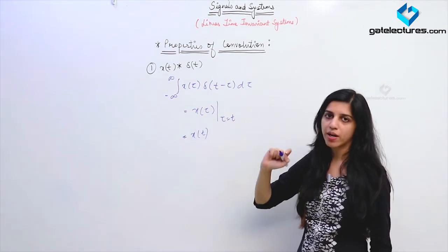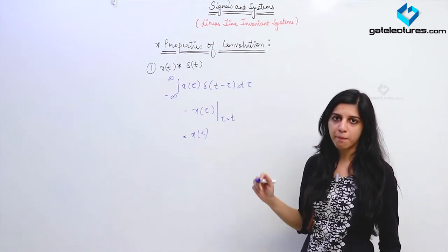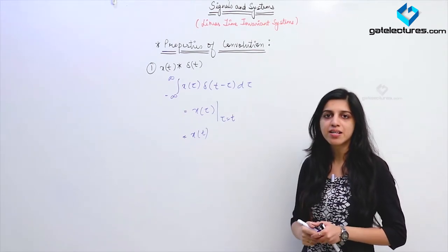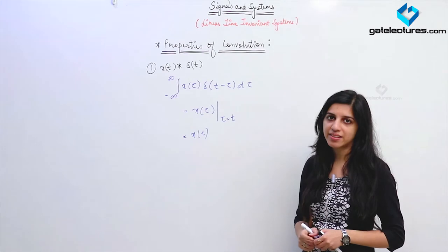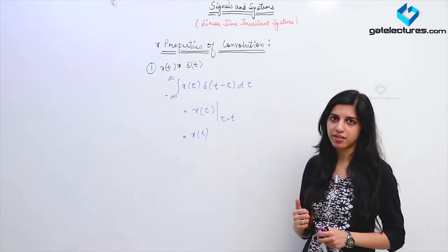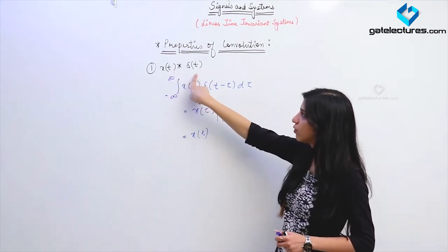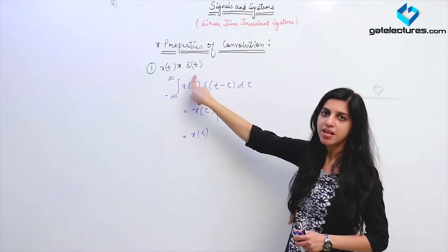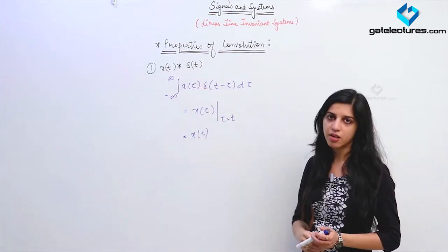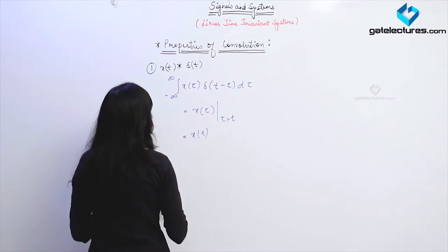Therefore, convolution of a signal with the unit impulse signal is going to yield the signal itself — it is not going to affect the signal. If you perform convolution of a signal with the unit impulse signal, you get back the original signal only; no effect is going to be there.